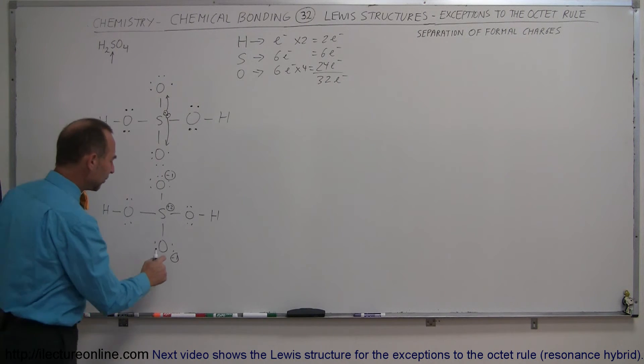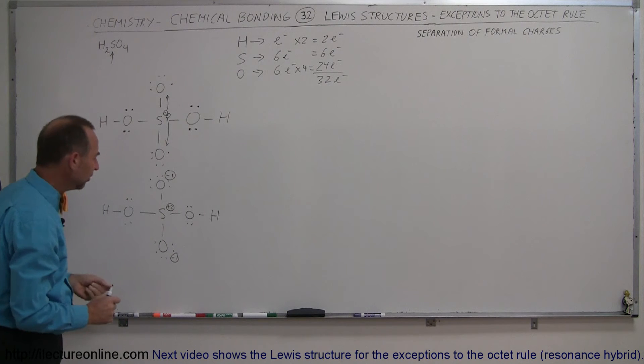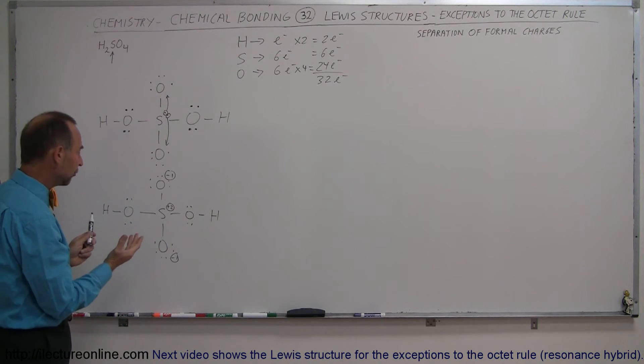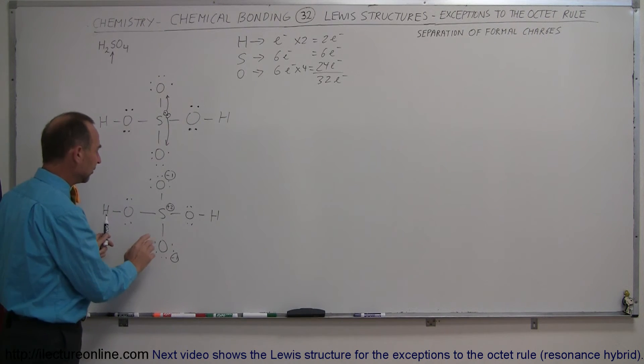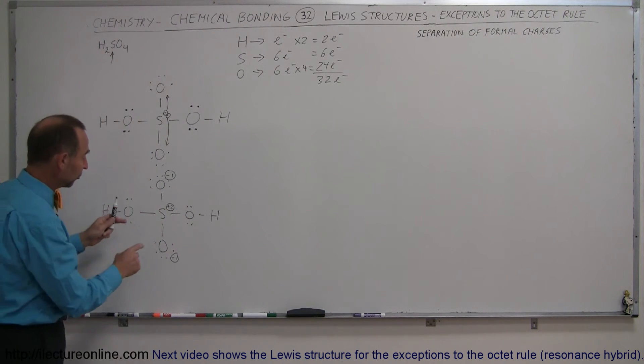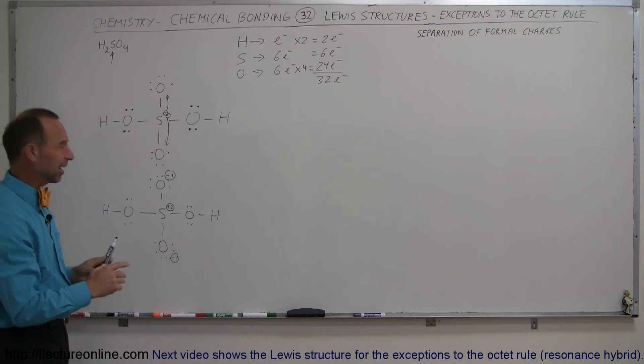And so that is not a preferred stable situation. What can happen here is to compensate for that, the molecule can form a double bond structure. So what will happen now is that two of these oxygens will begin to form a double bond with sulfur, and two of the oxygens will form a single bond with sulfur, which then will inherit the hydrogens on the other side.